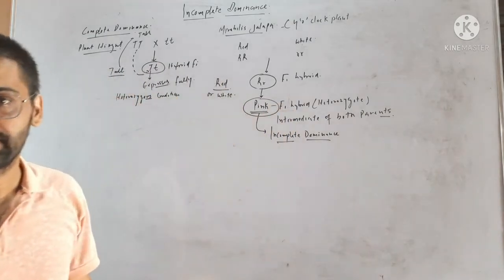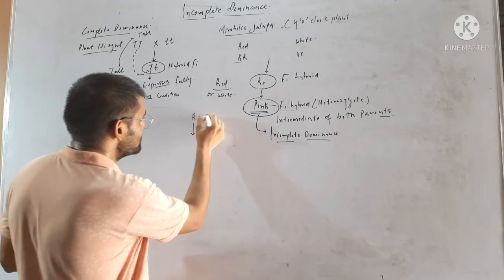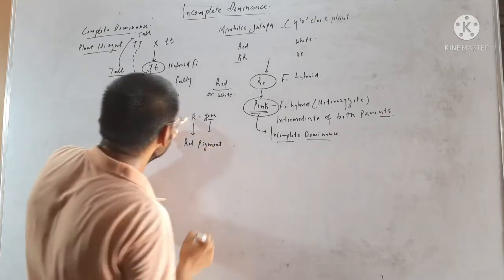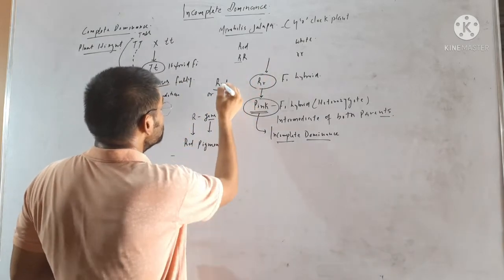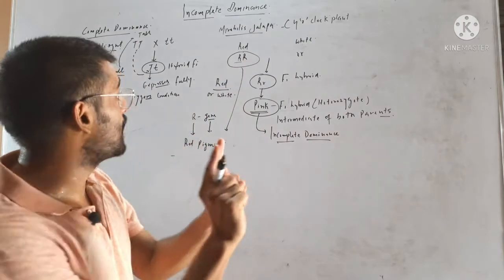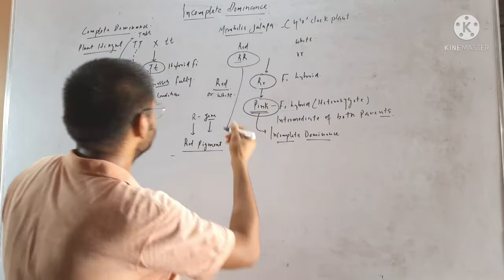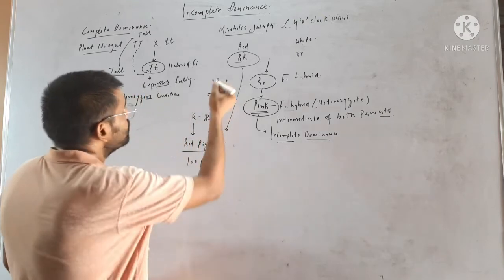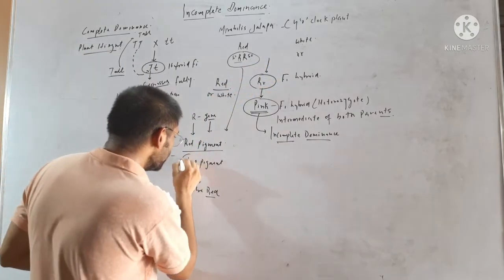Why is this F1 hybrid pink? Because the R allele — this gene — must form a product, and that product is red pigment. This gene forms red pigment. The amount of red pigment needed for the flower to be red must be fulfilled by both alleles. When both alleles are present (RR), the full amount of pigment is produced. For example, 100 pigments are needed to be red: 50 are formed by one allele and 50 by the other, so RR gives 100 pigments and the flower is red.